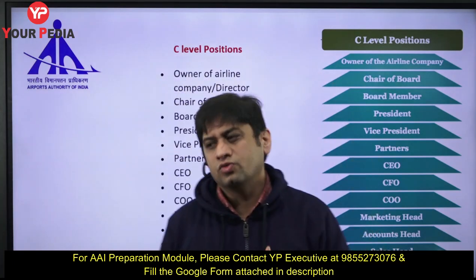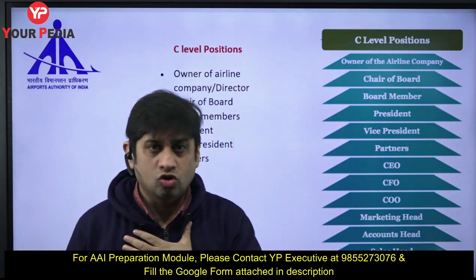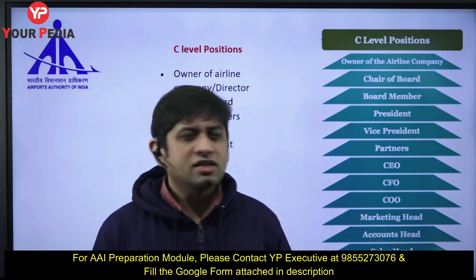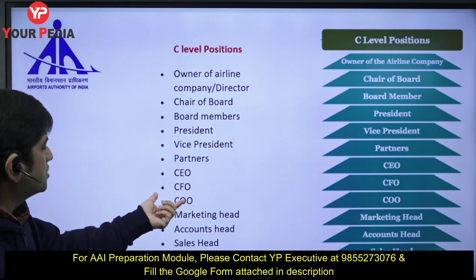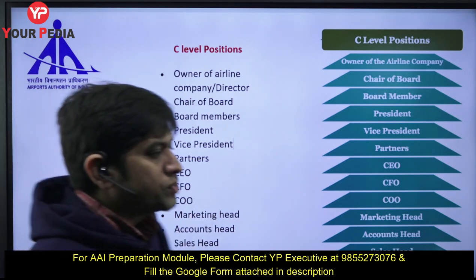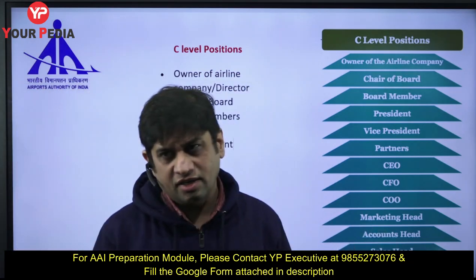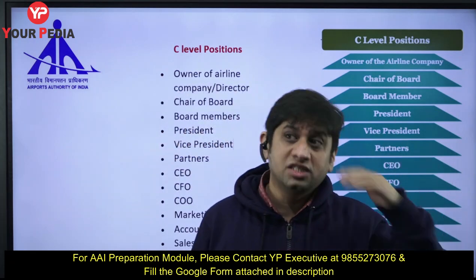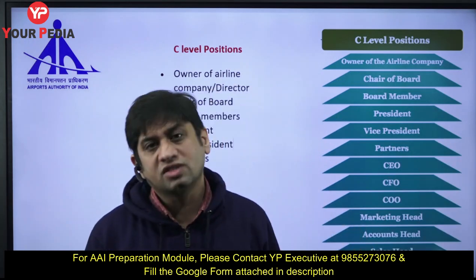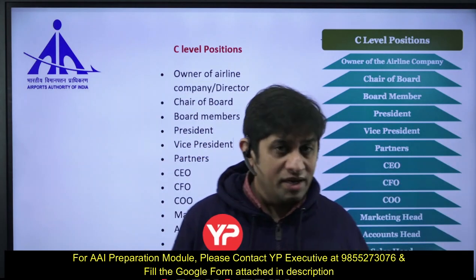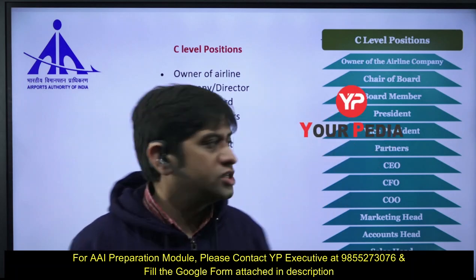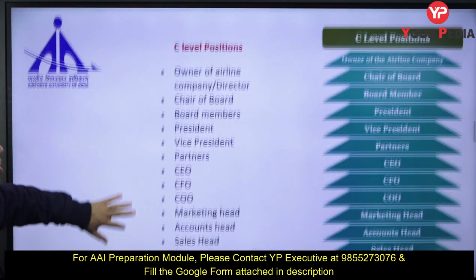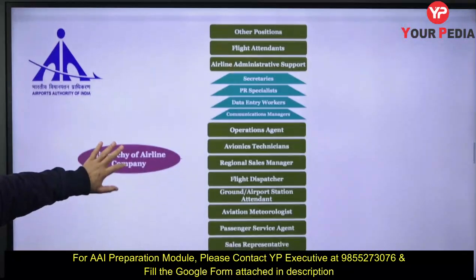In this exam they might give you three or four designations and ask which one is at the top, or ask you to arrange them in ascending or descending order. They might ask what the function of the CFO is, what the function of the CEO is, what the designation of Air India's chief is, what the designation of Indian Airlines' chief is, or what the designation of the chief in civil aviation or air traffic control is.